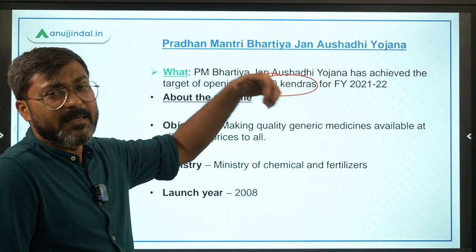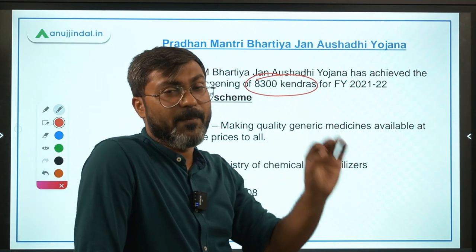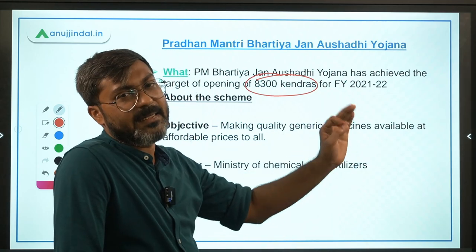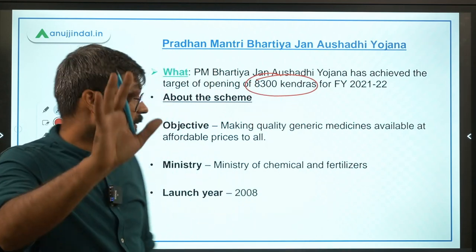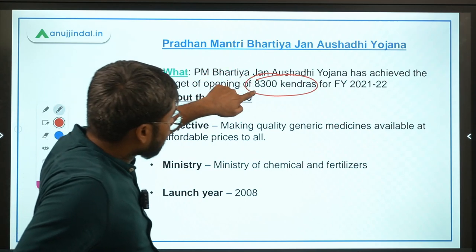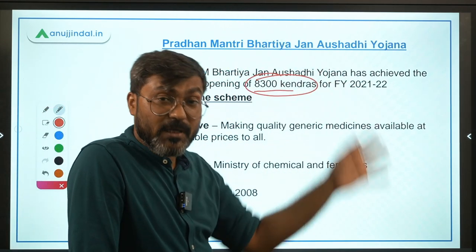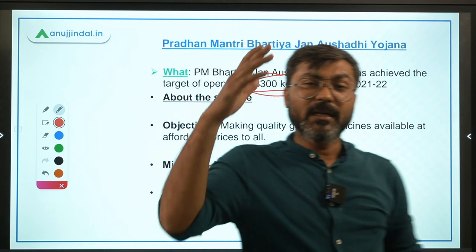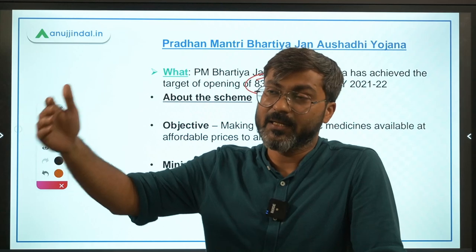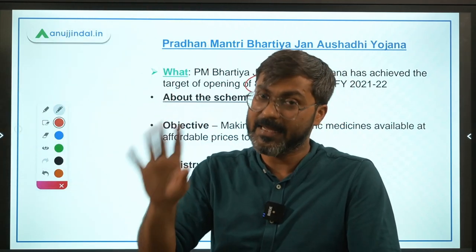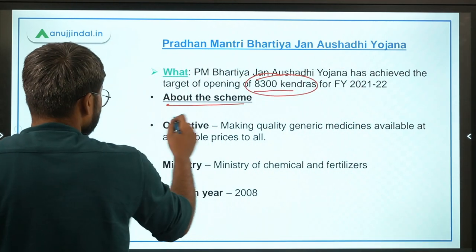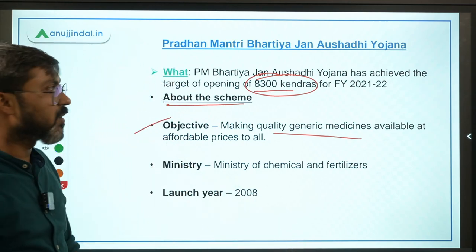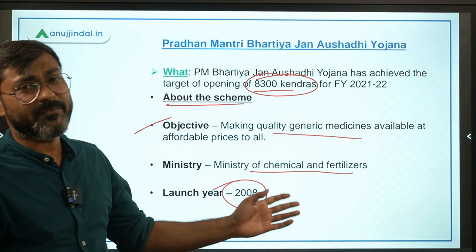Note: these 8,300 Kendras represent the total number, not just those opened in this financial year. The target was to take numbers to 8,300 — not to establish 8,300 Kendras in one financial year. The objective of this scheme is to make generic medicines available at affordable prices to all. The scheme was launched in the year 2008 by the Ministry of Chemicals and Fertilizers — not the Ministry of Health and Family Welfare.